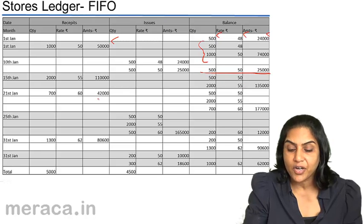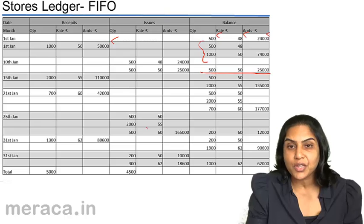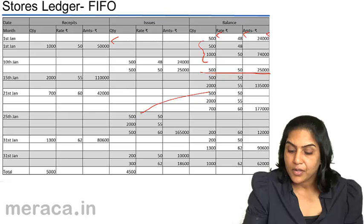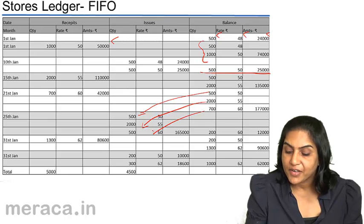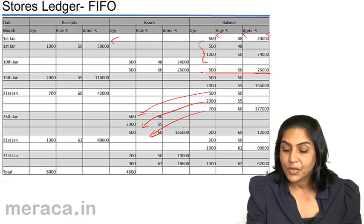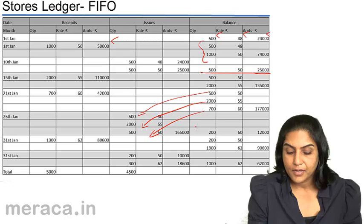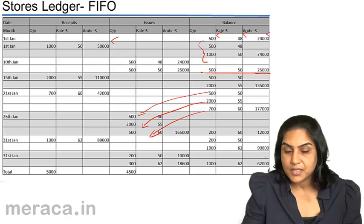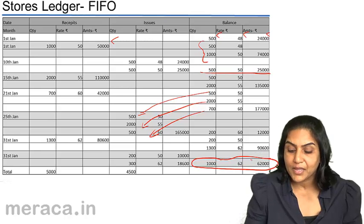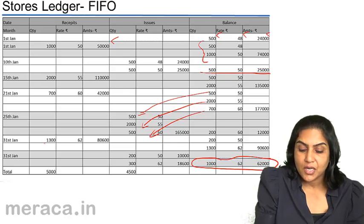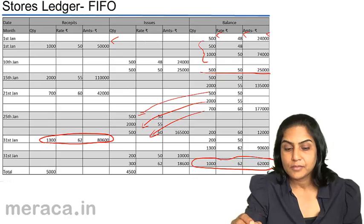Thus we see there is a record of every purchase and issue. On 25th January, there was a sale of 3,000 units. Following FIFO, 500 units at $50, 2,000 units at $55, and 500 units at $60 were sold. The total cost of these goods was $165,000. On 31st January, the final balance was 1,000 units at $62, totaling $62,000, being the price at which the last lot was purchased. This is an example of FIFO. The store's ledger could also have been maintained following the Weighted Average system.